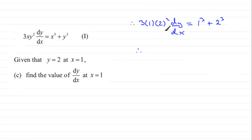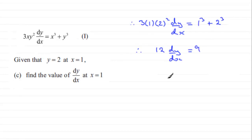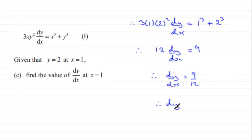If we work this out, what we've got on the left is 12, so we have 12 dy by dx equals 1 plus 8, which is 9. Therefore dy by dx is going to equal 9 divided by 12, and that cancels down to 3 quarters.